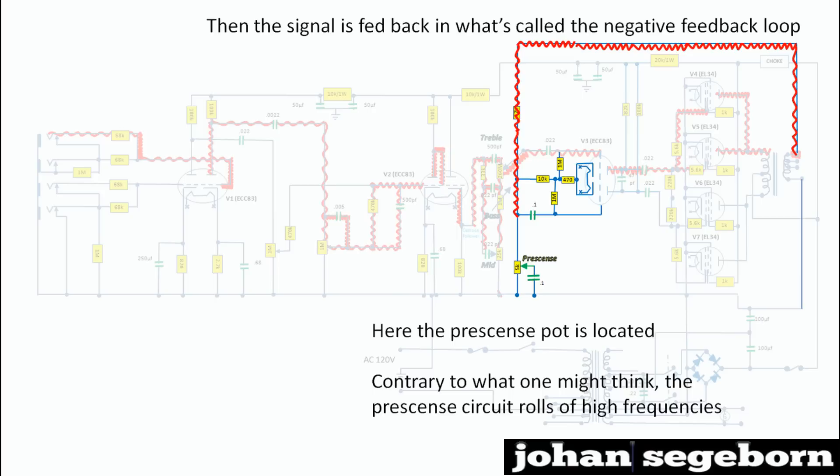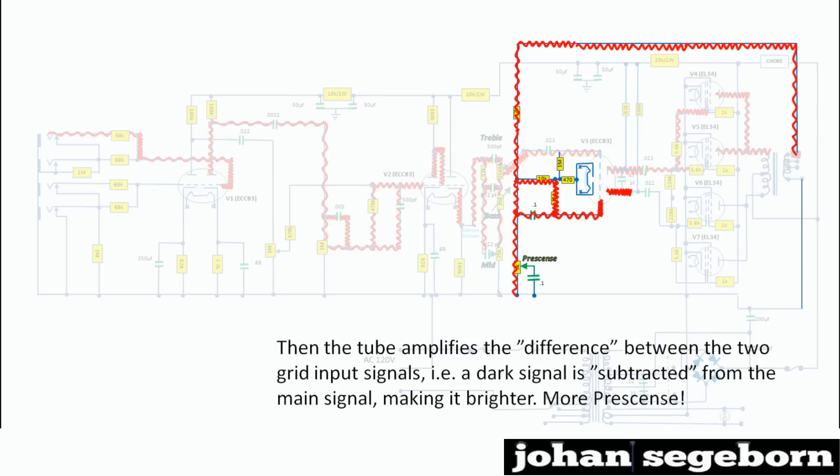Then the signal is fed back in what's called the negative feedback loop. And here we also have the presence pot located. And contrary to what one might think, the presence circuit rolls off high frequencies. And then that signal is fed to the other grid of the tube. Then the tube amplifies the difference between the two grid input signals. Which means that this darker signal you rolled off highs in the presence pot is subtracted from the main signal. So you subtract a dark signal from the main signal and you get a brighter signal. And that's how we expect the presence to work. More presence.